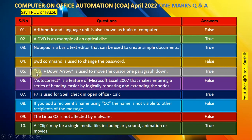Question number 5: Ctrl + Down Arrow is used to move the cursor one paragraph down. True. Question number 6: Ctrl + Down Arrow is used to move the cursor one paragraph down. True.